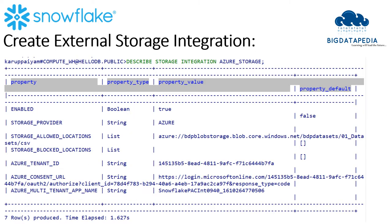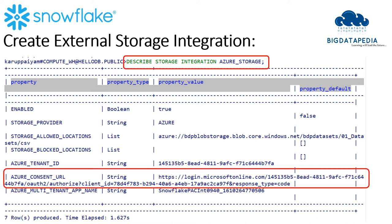Once the external storage integration has been created, you can describe it using the DESCRIBE command. The command is DESCRIBE STORAGE INTEGRATION with the integration name azure_storage that we created. Once this command is executed, you can see the Azure consent URL - it will provide a property value as an HTTP hyperlink. Just copy the hyperlink and paste it into the browser.